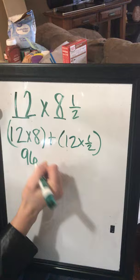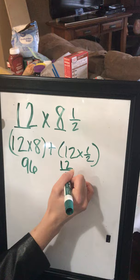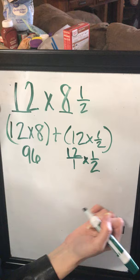So 12 times 8 is going to be 96, and then 12 times a half—I can turn this whole number into a fraction by putting a 1 underneath it, so then I multiply it by a half.